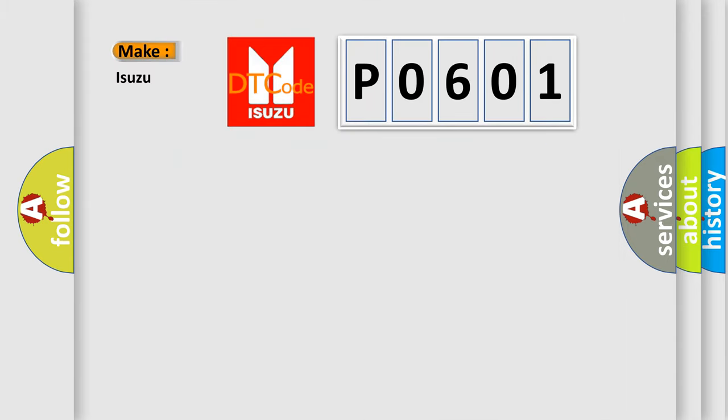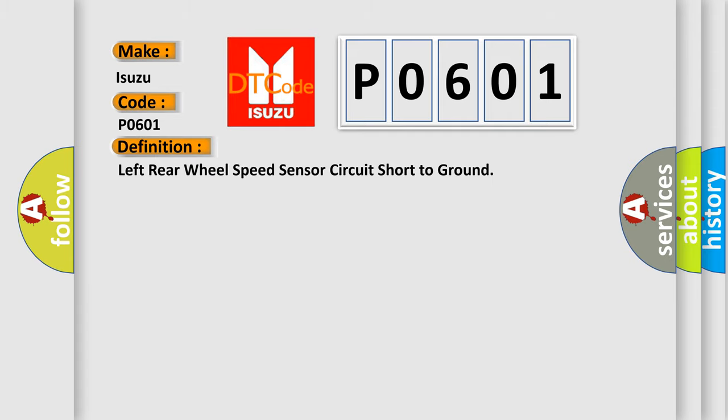So, what does the Diagnostic Trouble Code P0601 interpret specifically for Isuzu car manufacturers? The basic definition is: Left rear wheel speed sensor circuit short to ground. And now this is a short description of this DTC code.